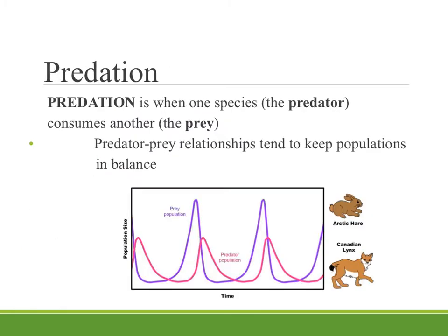Predation is when one species, which we call the predator, consumes the other — the prey — and typically the predator hunts down the prey. Predator-prey relationships tend to keep populations in balance.